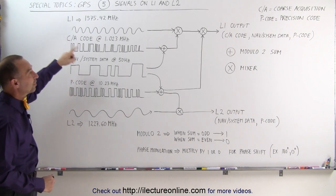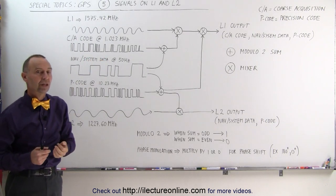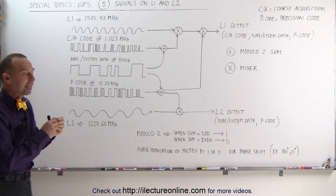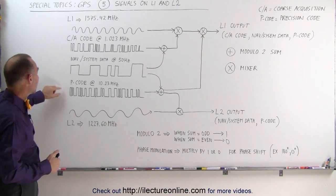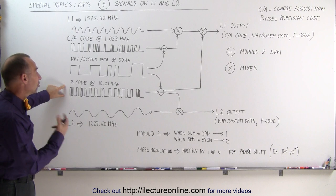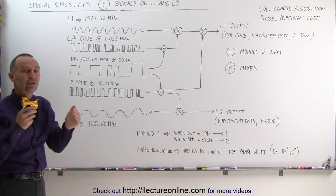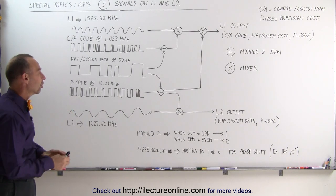We have what we call the CA code. CA stands for Coarse Acquisition. This is the information that the receiver gets to get an initial idea of where we are at, and then the P code here is what we call precision code that enables the receiver then to zero that down to a much more accurate result.